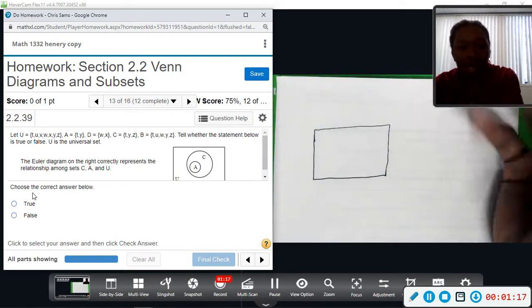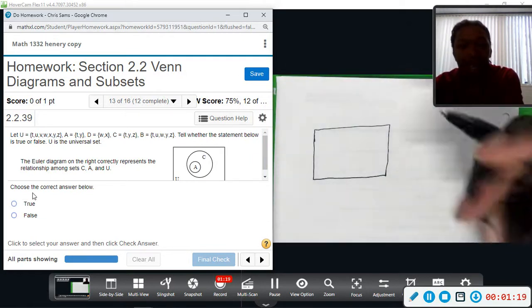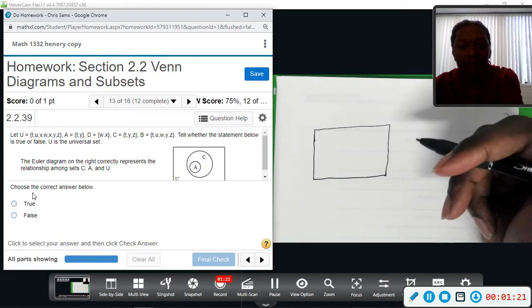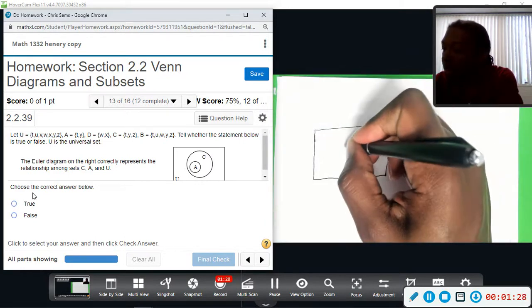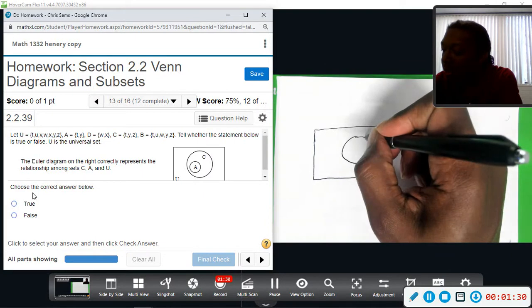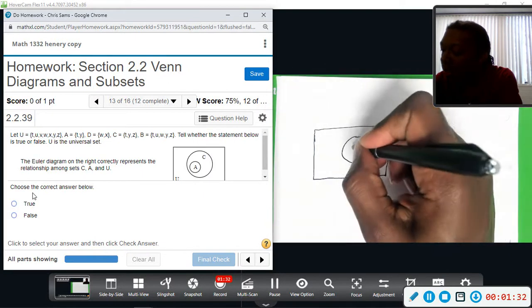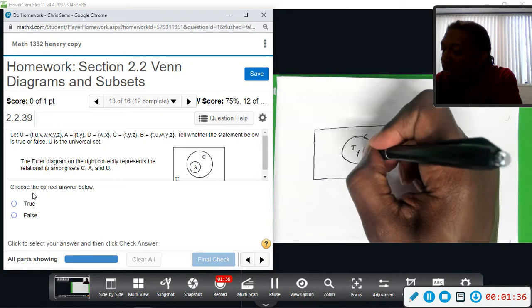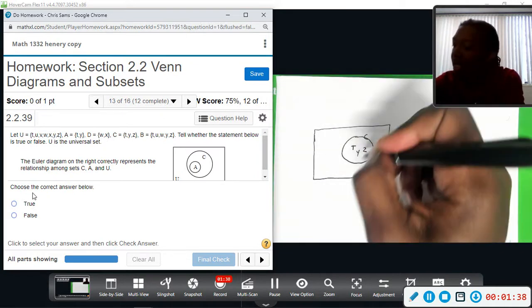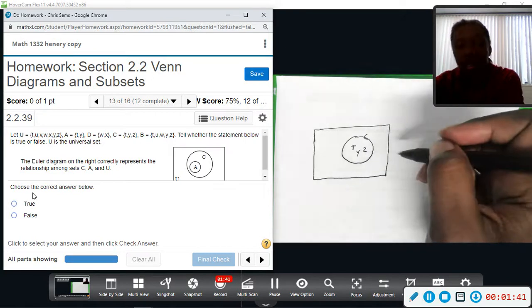We'll put the letters in there as we need. Now, it's showing C as the bigger set. So C contains t, y, and z. So inside the universal set, we definitely know that t, y, and z are in there. So this is set C. And we have t, y, and z in here.